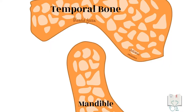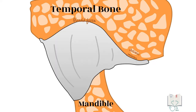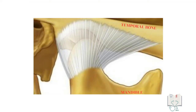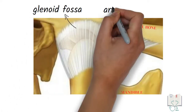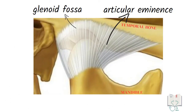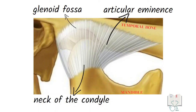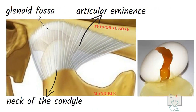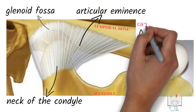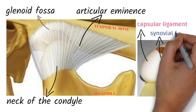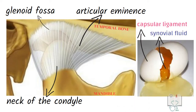The capsular ligament forms the capsule and covers the entire joint. It is attached superiorly to the temporal bone along the articular surfaces of the glenoid fossa and articular eminence, and inferiorly at the neck of the condyle. It encloses or encompasses the joint and therefore retains the synovial fluid.